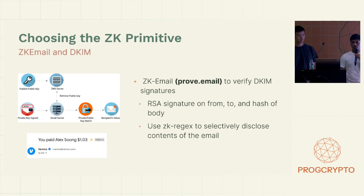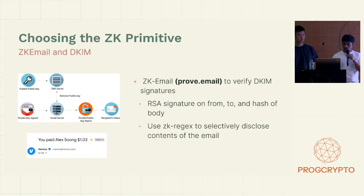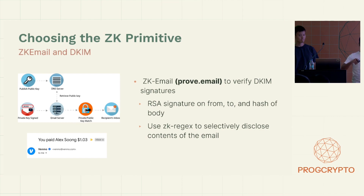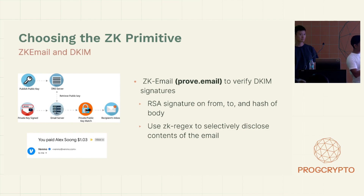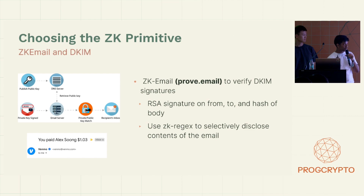Among all the existing primitives, we think ZK email is the most exciting one. A quick primer: ZK email allows you to verify DKIM signatures embedded inside emails. The signature is an RSA signature that signs on the from, the to, and the body of the email using the domain key. You also have ZK regex to selectively disclose and make statements about the contents of the email. If you want to dive deeper into ZK email, check out the talk that the ZK email team gave yesterday.